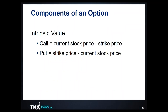To understand in the money, at the money, and out of the money, we first need to understand the components of how options are priced. Intrinsic value is determined by taking the current stock price and subtracting the strike price for a call option — it represents the amount by which the option is in the money. For example, if the stock is at $20 and the strike is $15, that call option would be $5 in the money. For a put option, you take the strike price minus the current stock price — if the strike is $20 and the stock is $15, the put is in the money by $5.